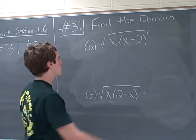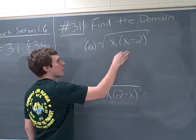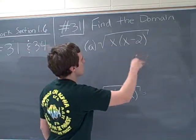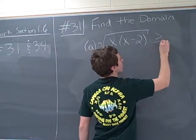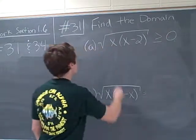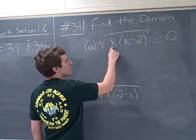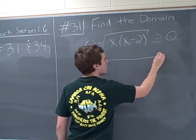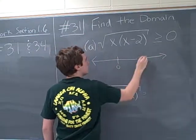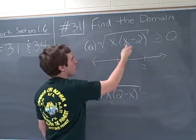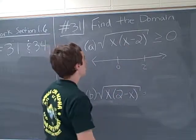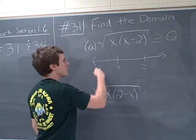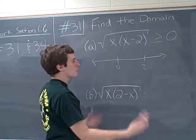And the way we're going to do this is in the form of a sign chart because we know that this expression has to be greater than or equal to zero. So we know that our critical values here are 0 and 2, so we'll draw a little number line. We know it can be 0 or 2 because the square root of 0 is 0. And what we're going to do here is plug in a test point from each section to see what the sign is.